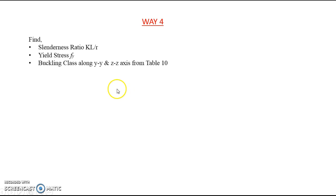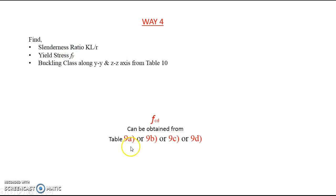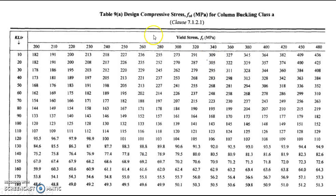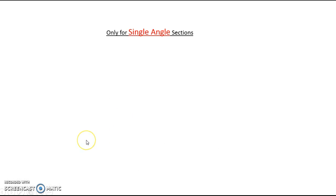Way 4 is also simple: find the buckling class, steel grade (F_Y), and slenderness ratio kL/r, then go to Table 9a, 9b, 9c, or 9d depending on the buckling class. In Table 9a, rows give F_Y and columns give kL/r. For example, if kL/r = 70 and F_Y = 250 MPa, you directly read off F_CD = 182 MPa. Interpolate if kL/r falls between two values.